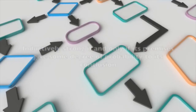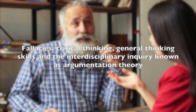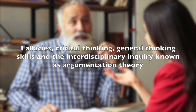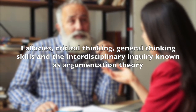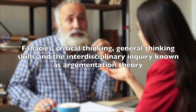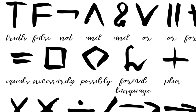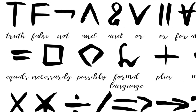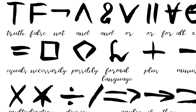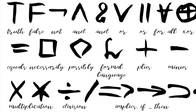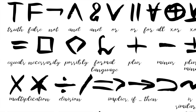Informal logic is the study of natural language arguments. Informal logic is associated with fallacies, critical thinking, general thinking skills, and the interdisciplinary inquiry known as argumentation theory. Informal logic may include both deductive and inductive reasoning, typically using a formal language or formal system. Logic is generally considered formal when it is translated from natural language into a formal language.